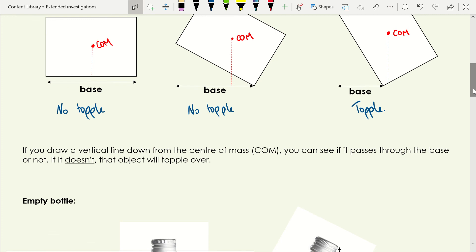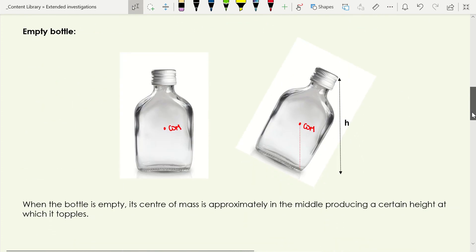Let's go back to our bottle. When your bottle is empty, the center of mass is roughly in the middle of your bottle, and that will give you a certain height at which it'll topple over. So that's with a depth of water of zero, the center of mass is roughly in the middle, that will give us a certain value of h.